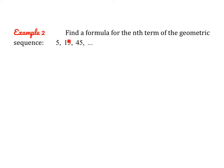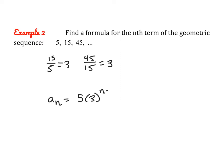You take the second term and divide it by the first, and you get 3. Then you take the third term and divide it by the second, and you get 3 again. So the common ratio is in fact 3. In this sequence it's obvious, but there are others where it might not be, so you need to know how to find the common ratio. Now let's make the formula: a sub n equals a sub 1, which is 5, times 3 to the power of n minus 1.